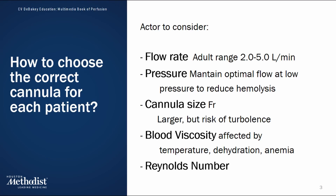Selecting the right arterial and venous cannula is just as important as calculating the flow itself. The goal is to achieve the necessary flow rates while minimizing complications like hemolysis, turbulence, or excessive pressure drops across the circuit. There are several key factors we need to consider when choosing a cannula.